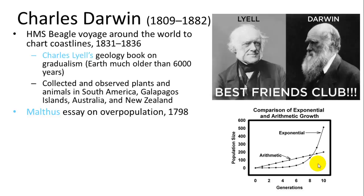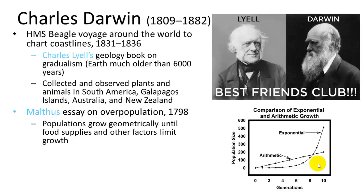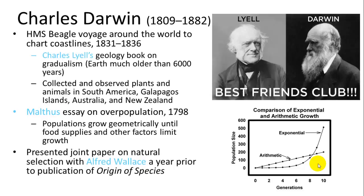Darwin also read an essay by economist Malthus on overpopulation, noting that many humans are born but not all survive — some factor limits survival, similar to evolution. Alfred Wallace was likewise a world traveler who noticed the same patterns independently, developed the theory of evolution separately, then contacted Darwin, and they published a paper together.